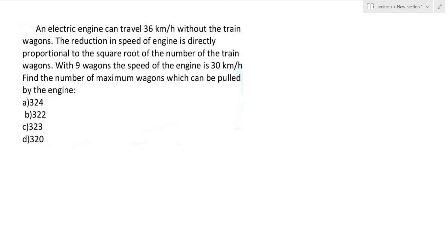An electric engine can travel 36 km per hour without any train wagons. The reduction in speed of the engine is directly proportional to the square root of the number of train wagons. With nine wagons, the speed of the engine is 30 km per hour. Find the number of maximum wagons which can be pulled by the engine.